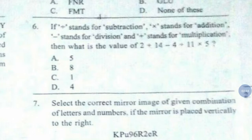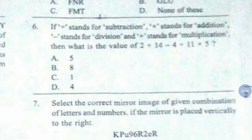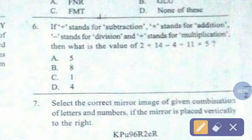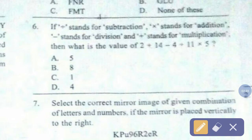Question number 6. If 'divide' stands for subtraction, 'multiply' stands for addition, 'subtraction' stands for division, and 'addition' stands for multiplication, then what is the value of 2 plus 14 minus 4 divided by 11 into 5? The correct answer is option number C.